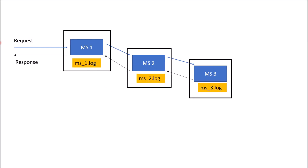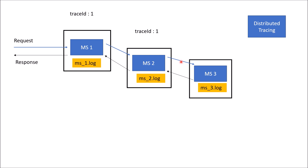Coming back to answering those questions using the distributed tracing concept: what if I associate the request heading to microservice1 with a unique ID called trace ID having value 1? If this request is spanning to microservice2, I will pass the same trace ID to microservice2, and since this request is also spanning to microservice3, I will pass the same trace ID to microservice3. So the value of the trace ID is the same — 1, 1, and 1.